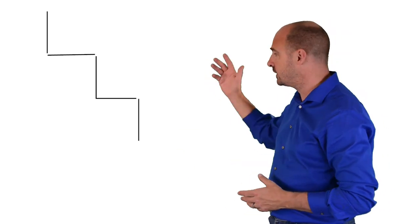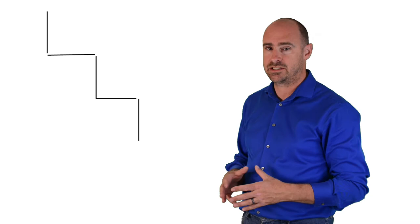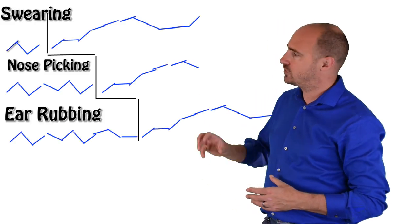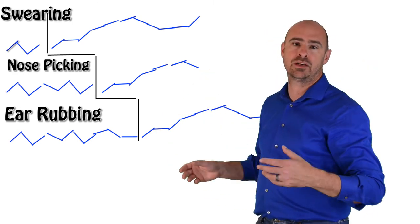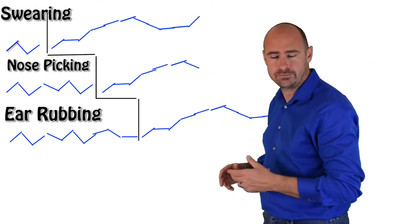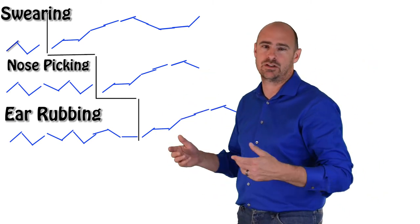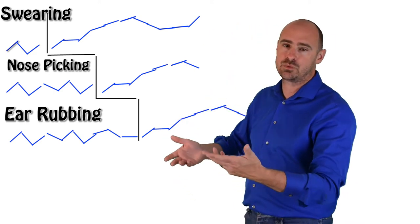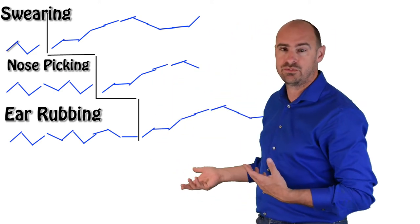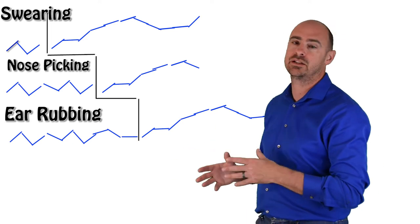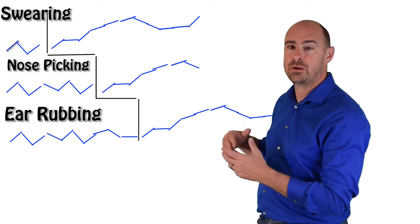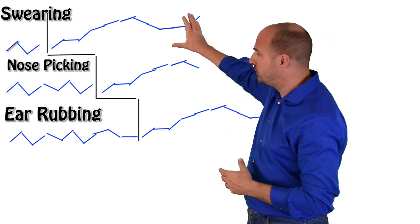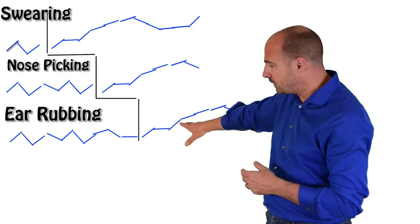And the third one is the multiple baseline across behaviors. So let's pick on Tox again. So Tox is engaging in a series of problem behaviors because Tox is just being Tox. And he is swearing, and he's picking his nose, and he's rubbing himself inappropriately on the ear. I don't know why that's inappropriate, but maybe it just looks funny. So we've got those three behaviors. We have an intervention we think that's going to work for all of them based on other work that we've done with Tox. And we've figured out that maybe non-contingent reinforcement might apply or might be a tool that we can use to reduce behavior across all these behaviors. So we do the intervention once, then we do it again, and we do it a third time.